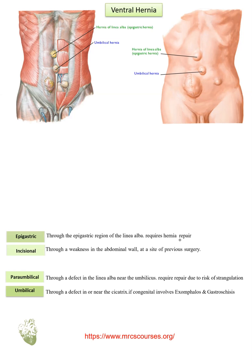We have also incisional hernia, which occurs through a weakness in the abdominal wall at the site of previous surgery — over a scar. As you see here from outside, over a scar, it is called incisional hernia.